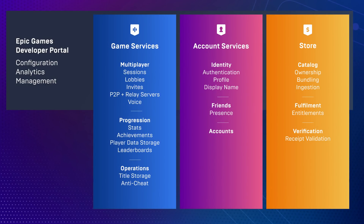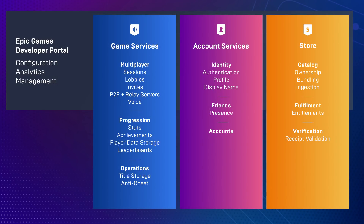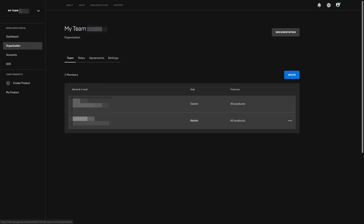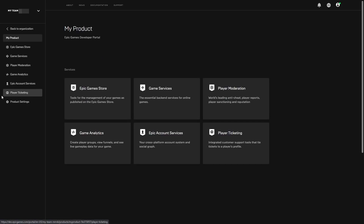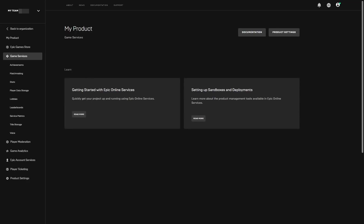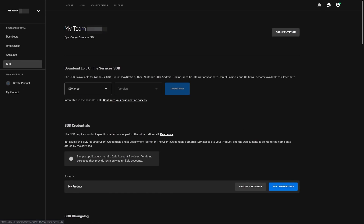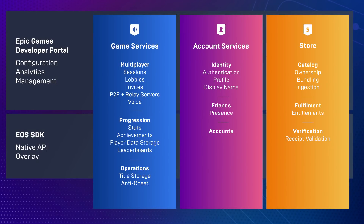Configuration is done through the Epic Games developer portal, which enables you to manage your organization or your team, and your products or your games, as well as service-specific configuration. You'll also find the SDK downloads here. All these services can be accessed directly from your game using the SDK, which is available in C and C Sharp across PC, iOS, Android, PlayStation, Xbox, and Nintendo Switch. And for specific service calls, you can also use your own backend through the web APIs.